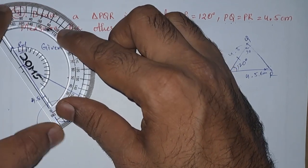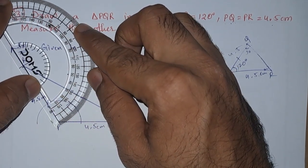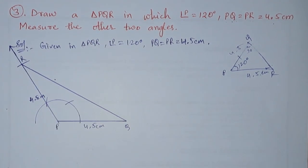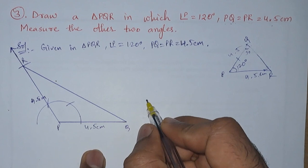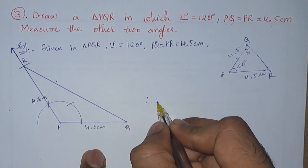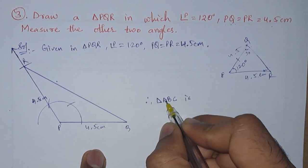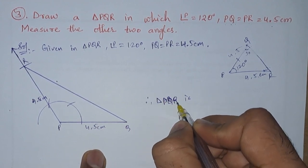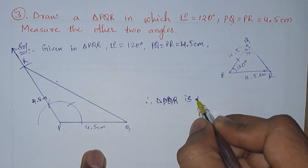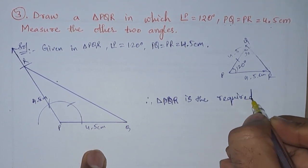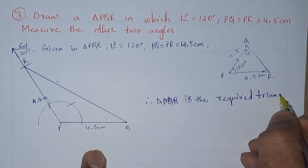Next, from here also we will measure it. So again here we are getting 30 degrees. So finally we can write: Therefore, triangle PQR is the required triangle.